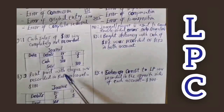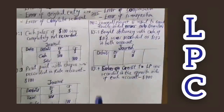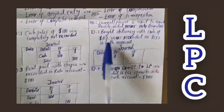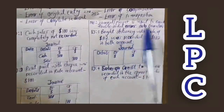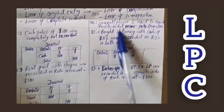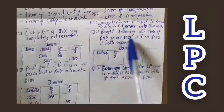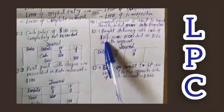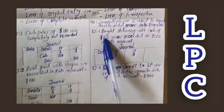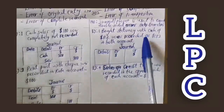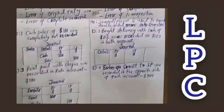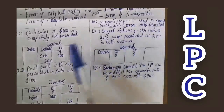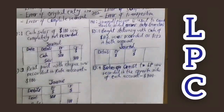We will use the $20 difference to make the correcting journal entry. Stationery was purchased with cash, so normally cash is credited and stationery is debited. Both accounts have been overcast by $20. Since cash was overcredited, meaning we recorded more payment than actual, we debit cash by $20 to reduce it back to the correct amount.